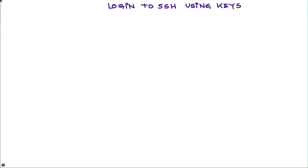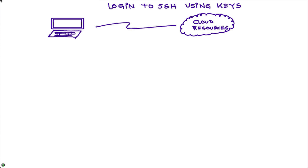Let us understand why logging into SSH using key pairs is more secure than using even strong passwords. In a previous video, whose link I'll put in the description of this one, I showed how using Putty as the client, I can login into a cloud resource by just specifying the user ID. Putty then does the negotiation with the private key, which we're going to describe right now to understand why that is actually very secure.